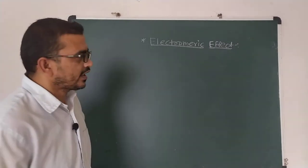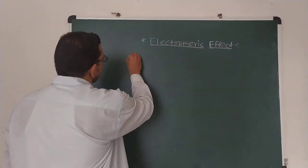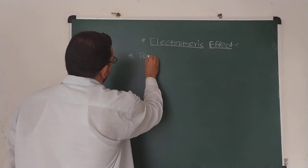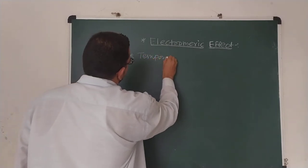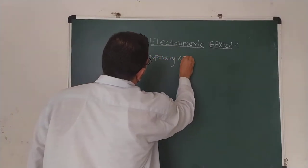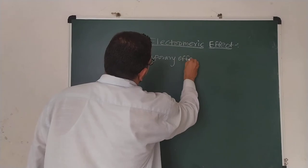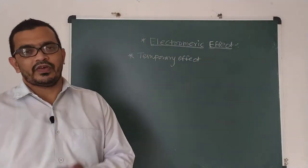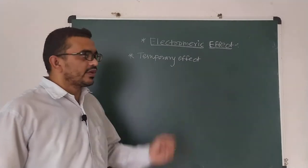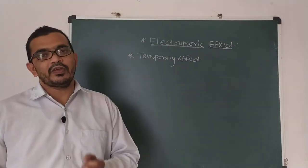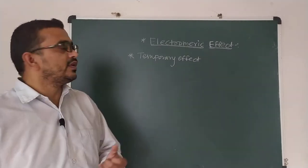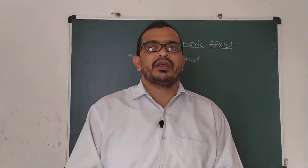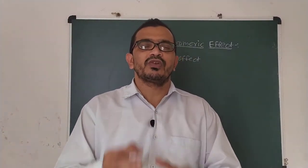This is another very important type of effect. This is the type of temporary effect. The previous three effects — inductive, resonance, and hyperconjugation — are permanent effects, but the electromeric effect is a temporary type of effect. Temporary means it exists only for a certain interval of time, after which it vanishes.